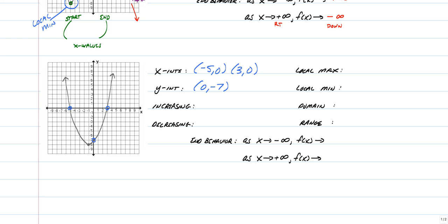Since we're listing coordinates, I want to talk about the local max and local min. For the local maximum, you should have said none — look, it never curves from increasing to decreasing. The only thing it does is it has a coordinate at the bottom of a curve, so a bottom of a curve is a local minimum, which would be negative one comma negative eight. I also hinted earlier — when it's the most bottom point of that graph, not only is it local, it's also known as an absolute minimum. If it was the highest point on the graph, it would be the absolute maximum.